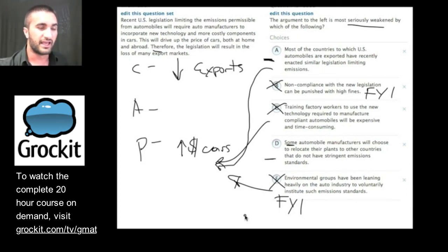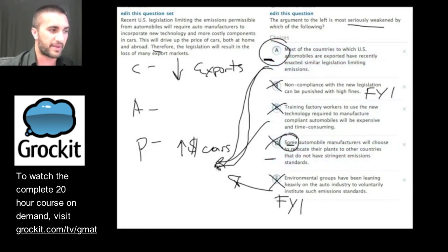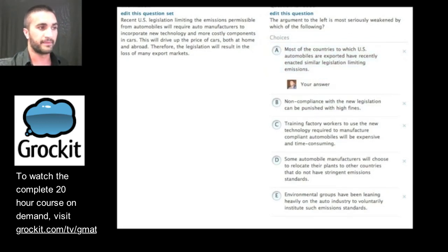So everyone take a moment and look at E and D and type into the chat box which answer you think is right, A or D. Let's see what people have to say. Do we have any answers yet? No answers yet. So in D it tells us that the legislation will result in the loss of many export markets. And here it tells us that some automobile manufacturers will choose. We're not really sure what this means. This could mean that some people will lose their exports and some will not. A, if we add it to the list of premises here, lets us know that if other folks are enacting similar legislation, they should experience a similar increase in the price of their cars. And that should flush out for us. Let's pick A and see what happens.